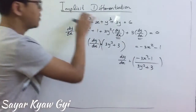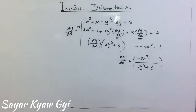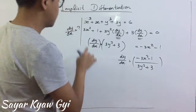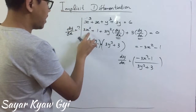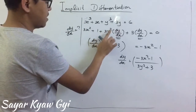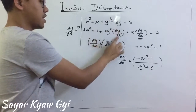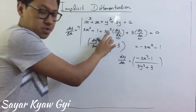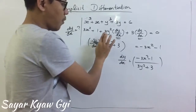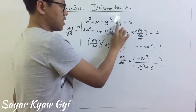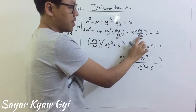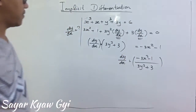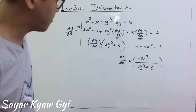This is how we do implicit differentiation — we differentiate every term with respect to x. Important: when you differentiate y with respect to x, whenever you do the y, you have to write dy by dx. When you differentiate a constant, you get zero.